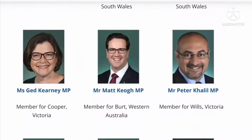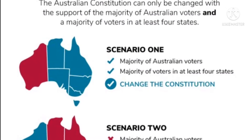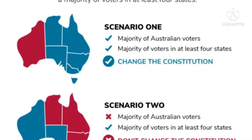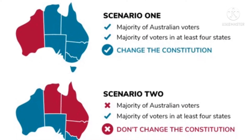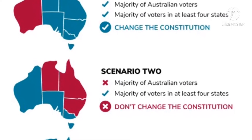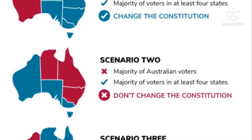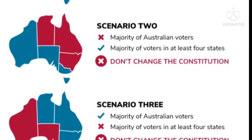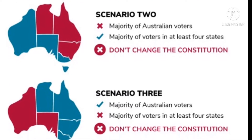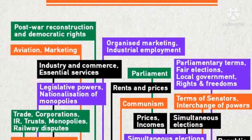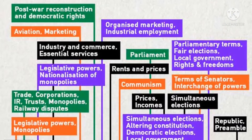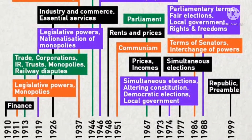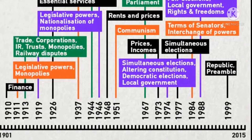The second is that a motion to change the Constitution must be successful. For it to be successful, it has to have the majority of the Australian electorate voting for it, as well as the majority of electors in the majority of states. Because of this, of the 44 referendum issues, only 4 have been successful.